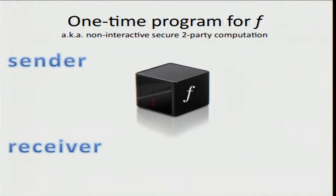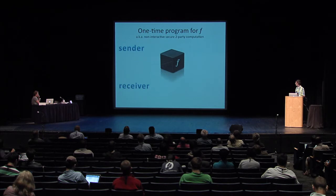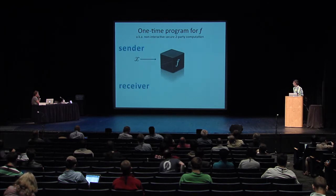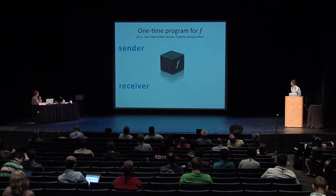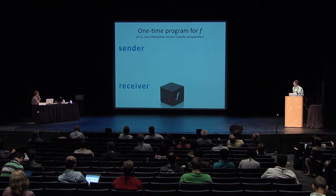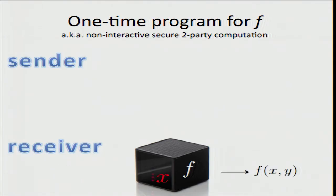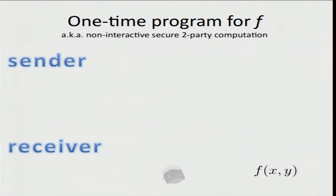Suppose we have a fixed public function f. A one-time program for f would allow for secure non-interactive two-party computation of the function f. The sender has a private input x which inputs into some program or device for the function f. She sends the program to the receiver, who then inputs his own private input y. The one-time program should output the value of the function f evaluated at x and y, and then self-destruct — it can't be used for any additional operations.